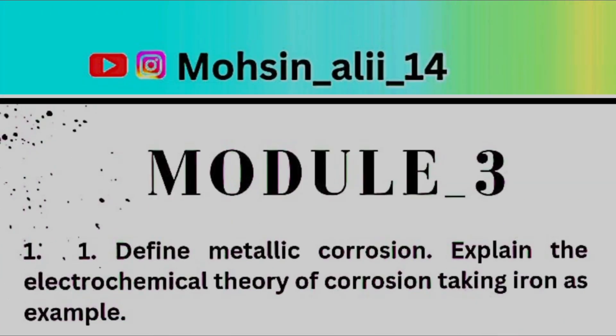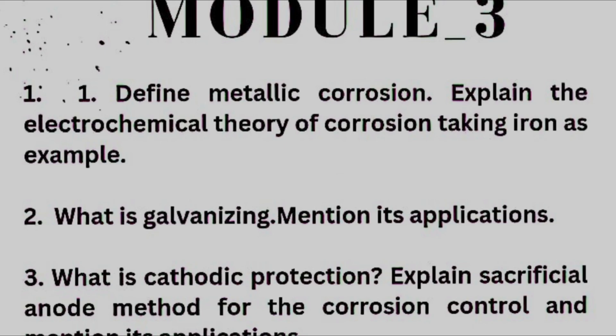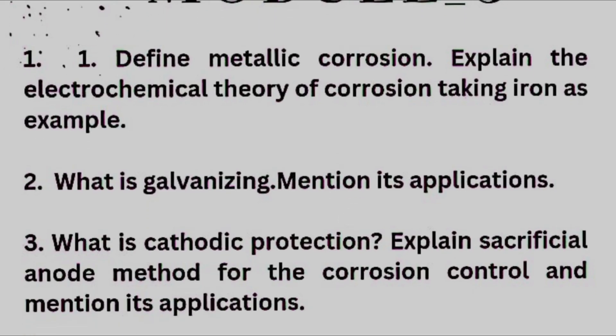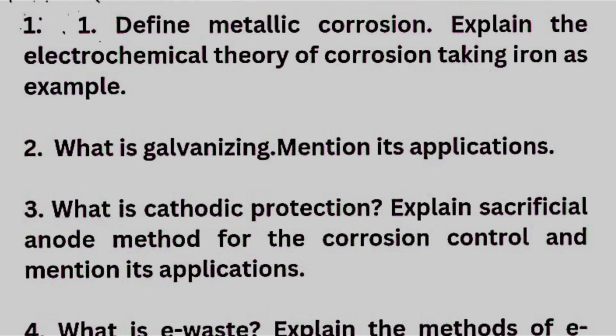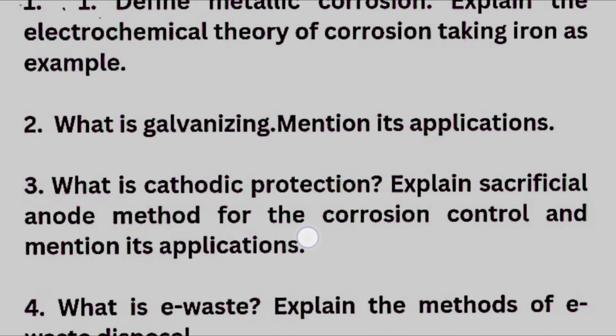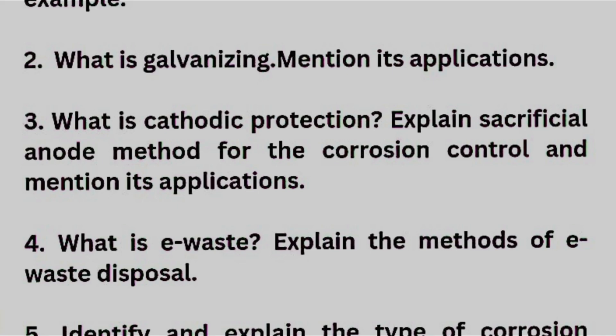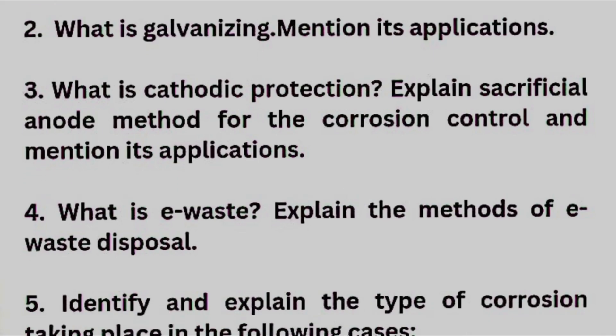Next we have Module 3 in which you have to cover: define metallic corrosion and explain the electrochemical theory of corrosion taking iron as an example. This is a super important question — if I consider the old schemes from 2017, 2018, and 2021, this question is repeatedly asked in the examination. So you should not neglect this one. Next: what is galvanizing? Mention its applications. And what is cathodic protection? Explain the sacrificial anode method for corrosion control and mention its applications.